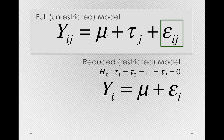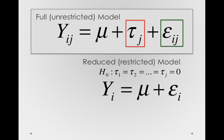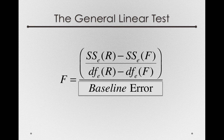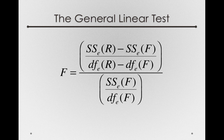Now, we don't know if the treatment offsets are there or not — that's why we're doing this whole model comparison approach, to test whether those treatment offsets really are there in the population. But if we're doing this hypothesis test and we need a denominator error term — a benchmark for how much prevailing error there is in the world — it makes sense to use the epsilon term from the full model, because the epsilon term from the reduced model will be contaminated if there really are treatment differences. So in our general linear test, the baseline for error that we use are the sums of squares error from the full model and the degrees of freedom error from the full model.